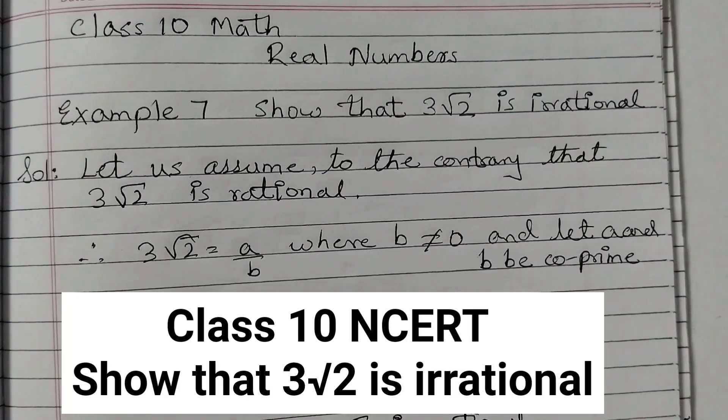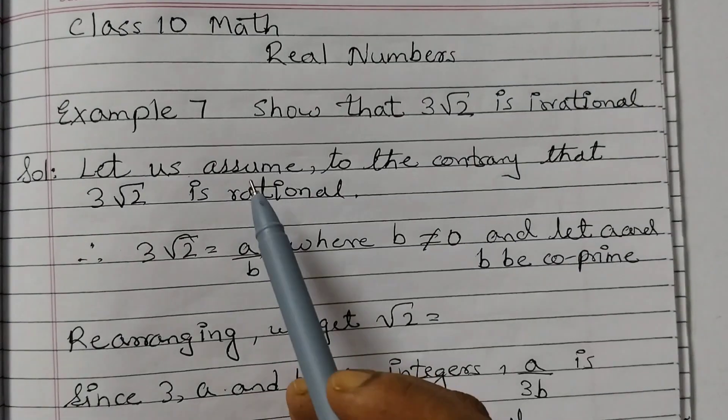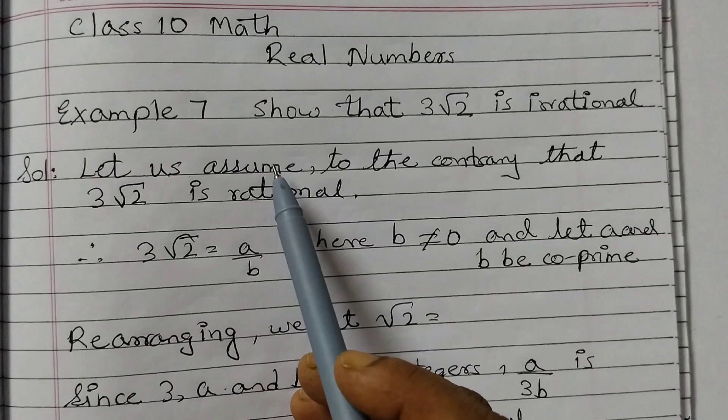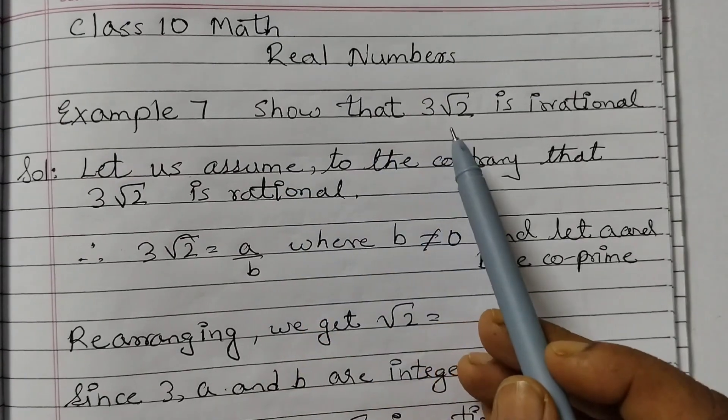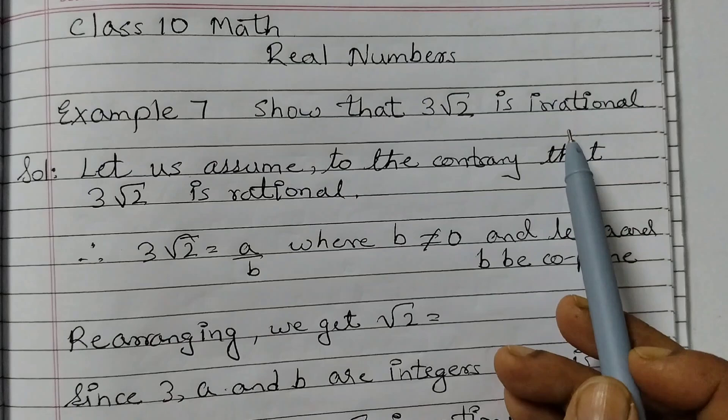Hello students, welcome back to Rosie Mads class. Today we shall do example number 7 from chapter 1 real numbers and this is a very important question. Show that 3 root 2 is irrational.